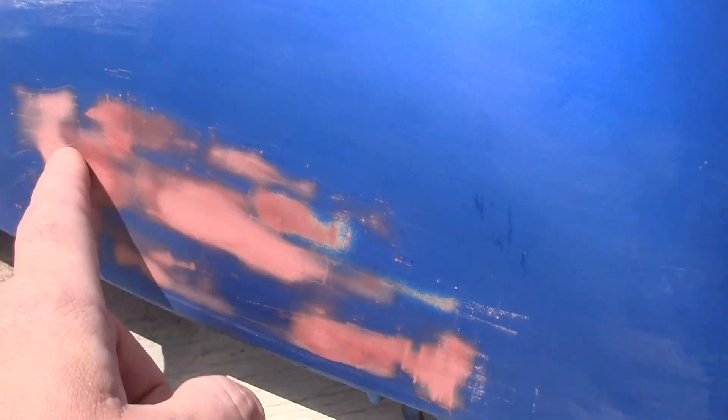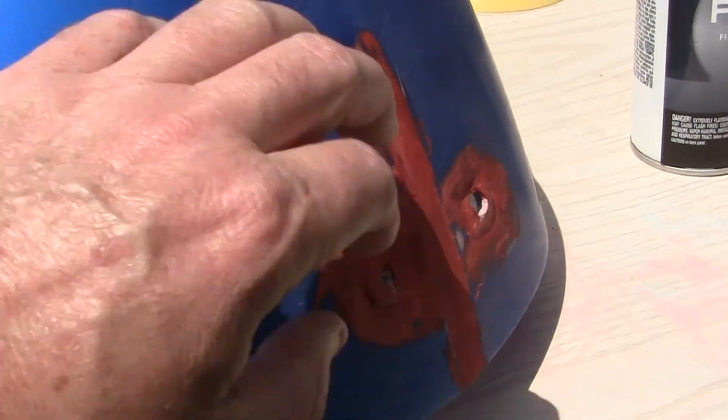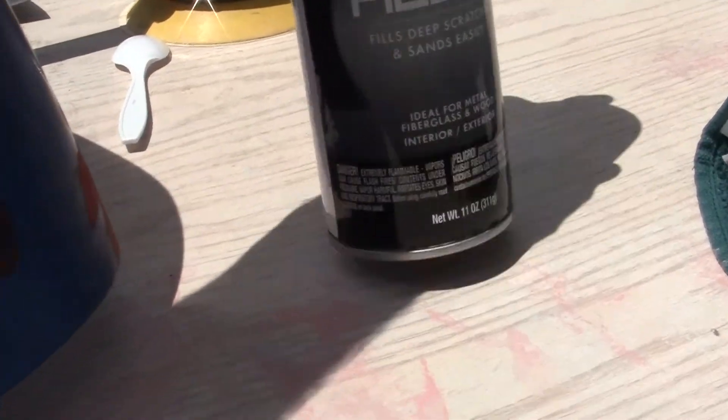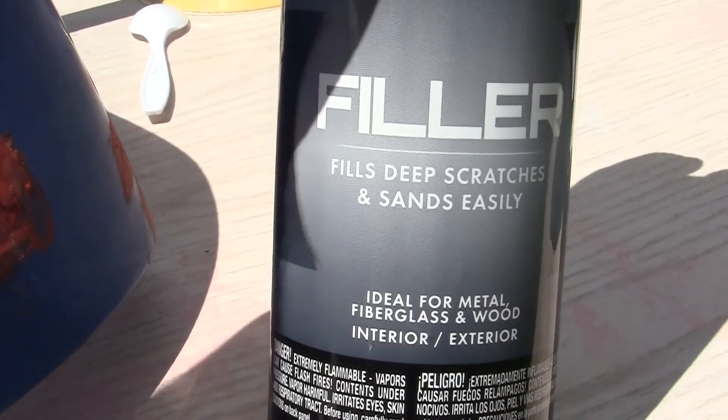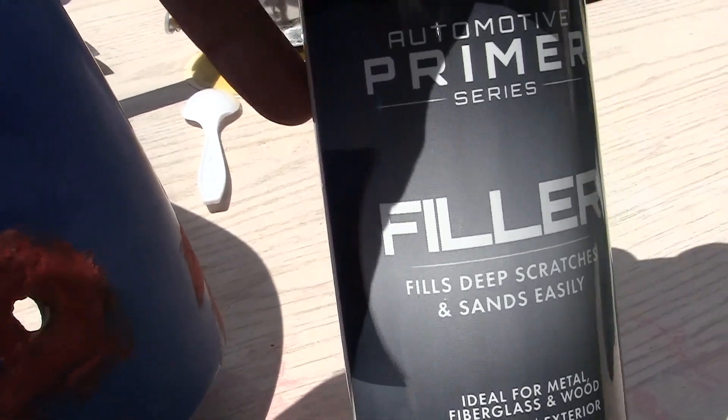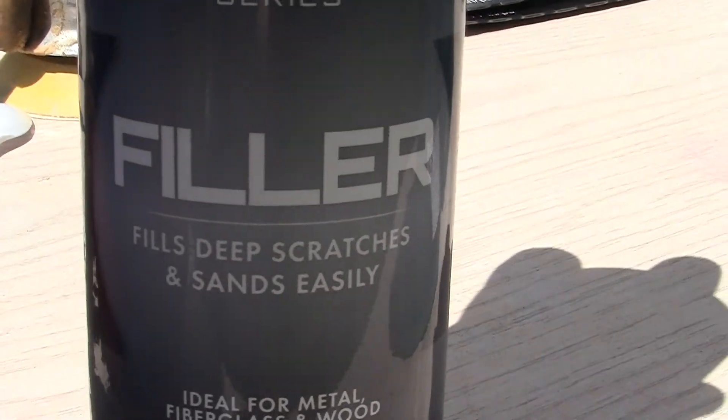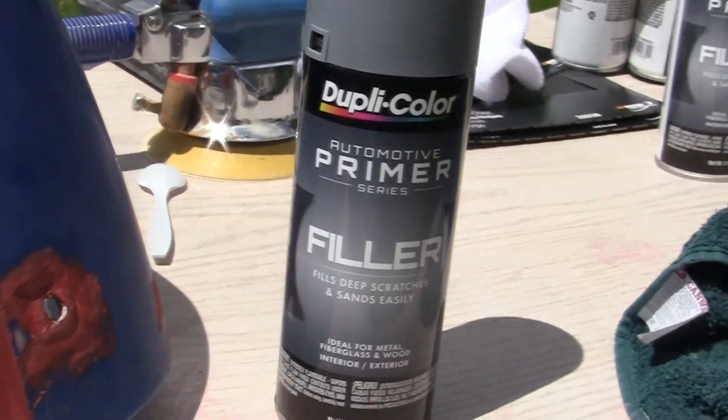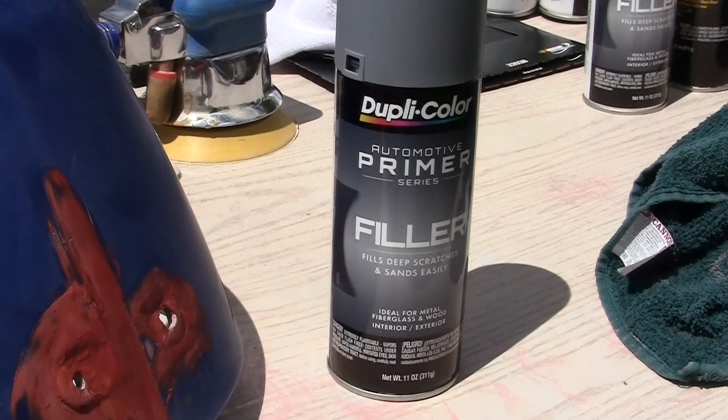And as soon as I get everything where I want it here, then we'll start using the primer filler. All this is, is glue with a bunch of talcum powder in it. That's all it is. We have a primer filler and we have a primer sealer. They're two different things. They do two different things.